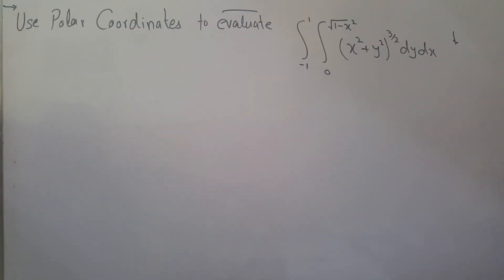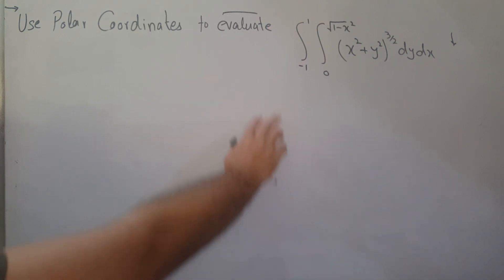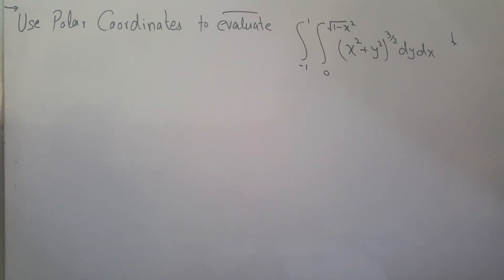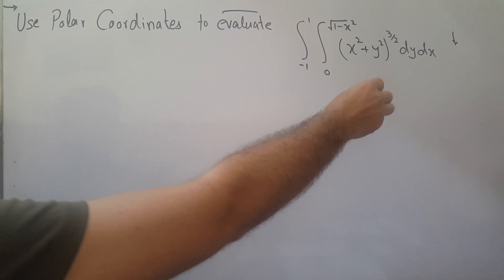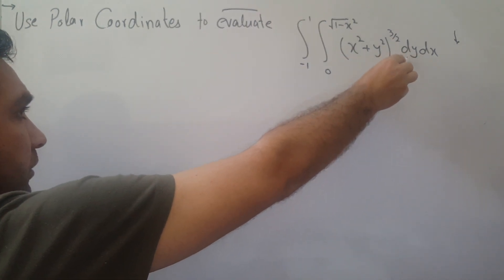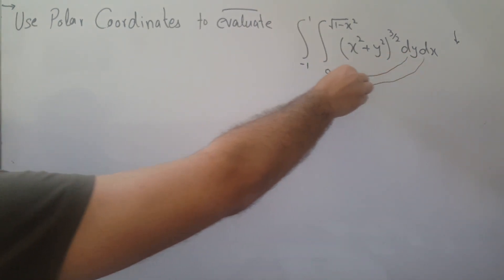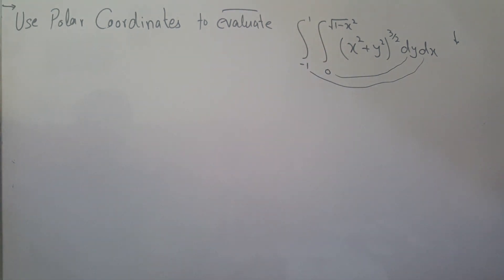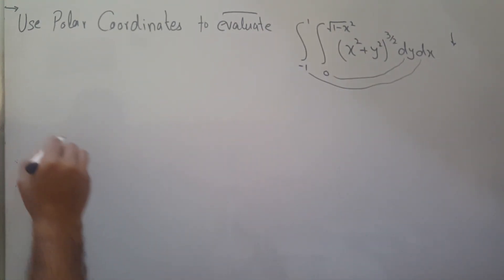Hello everyone. In this video we will evaluate the integral given in rectangular coordinates and transform it into polar coordinates r and theta. The first thing we need to do is find the limits and then sketch the graph so that we understand the limiting values.